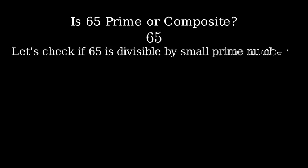Let's explore whether 65 is a prime or composite number by finding its prime factorization. To determine if a number is prime or composite, we need to check if it can be divided evenly by any numbers other than 1 and itself. Let's start by checking the smallest prime numbers.